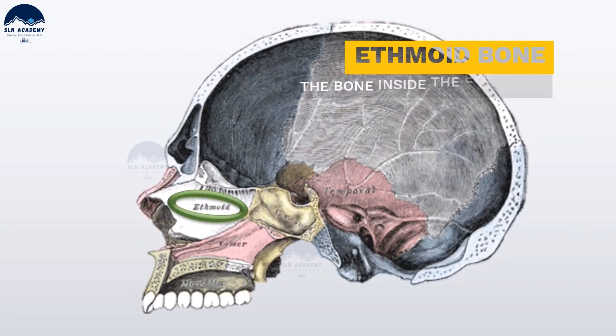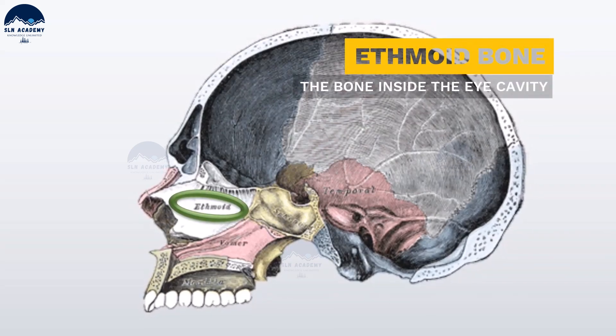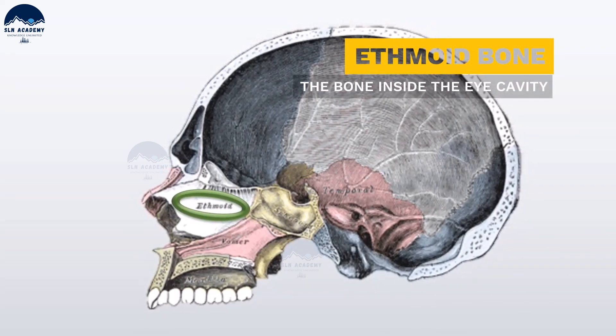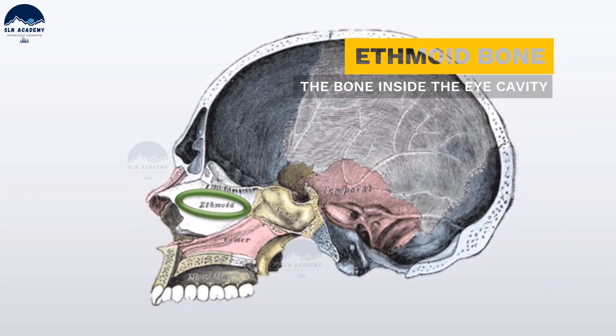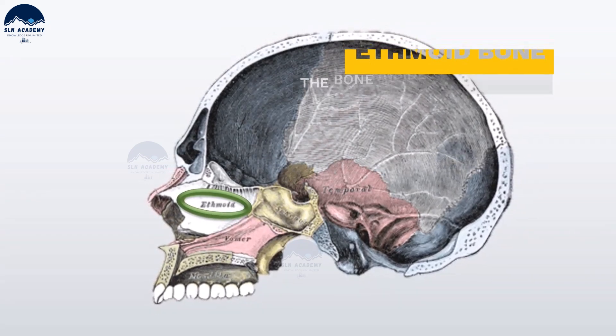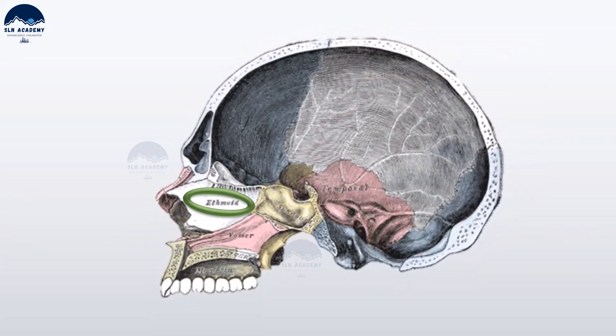Ethmoid bone. It is an unpaired bone in the skull that separates the nasal cavity from the brain. It is located at the roof of the nose between the two eye cavities.